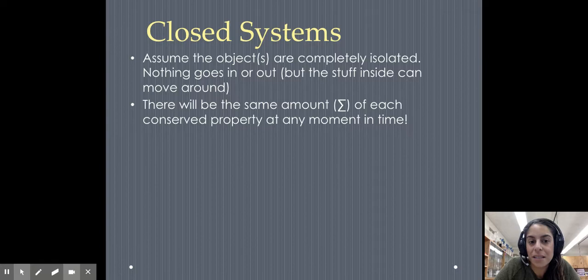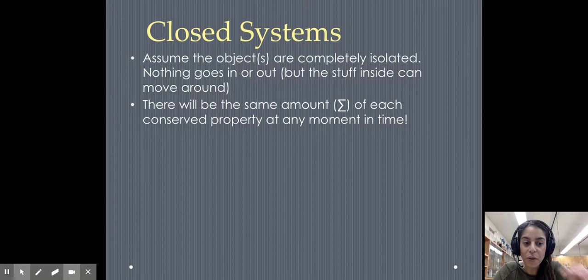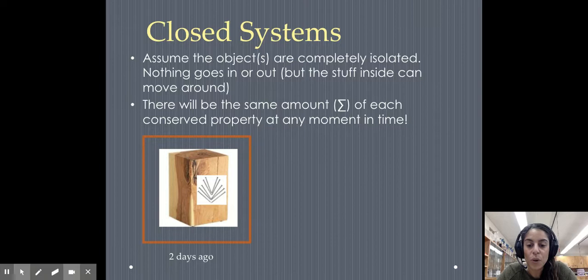So what's going to happen is in a closed system, there's going to be the same amount of sigma or total each time of each conserved property in any moment of time. So what that basically means, let's say we're talking about the mass. The total mass is always going to stay the same. Maybe the total energy is going to stay the same.